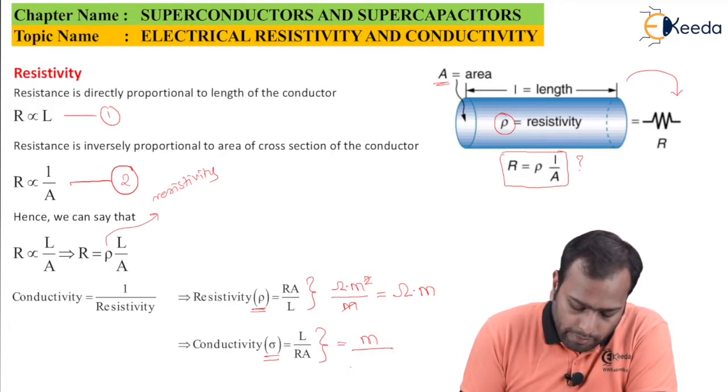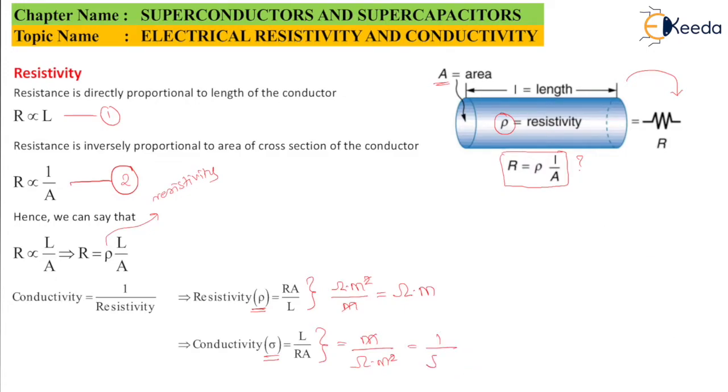Similarly, here it is m upon ohm into meter square. It gets cancelled, so it becomes 1 upon ohm meter, which is ohm meter the whole inverse. Do note it is also known as Siemens.